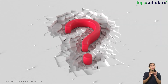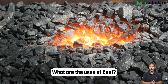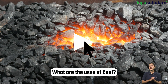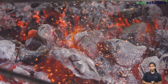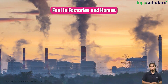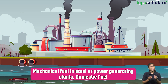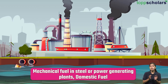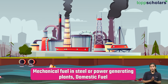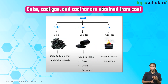Now I have a quiz for you — tell me, what are the uses of coal? You can pause the video to write up your answer. Coal is used as fuel in factories and homes. It is used as mechanical fuel in steel or power generating plants and also as a domestic fuel. Coke, coal gas, and coal tar are obtained from coal.